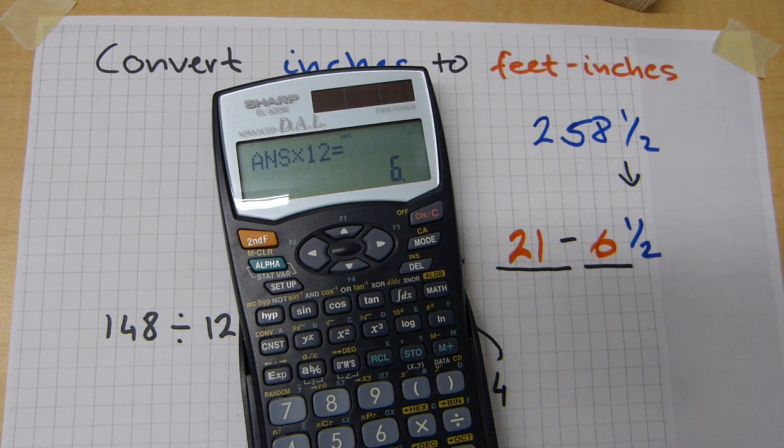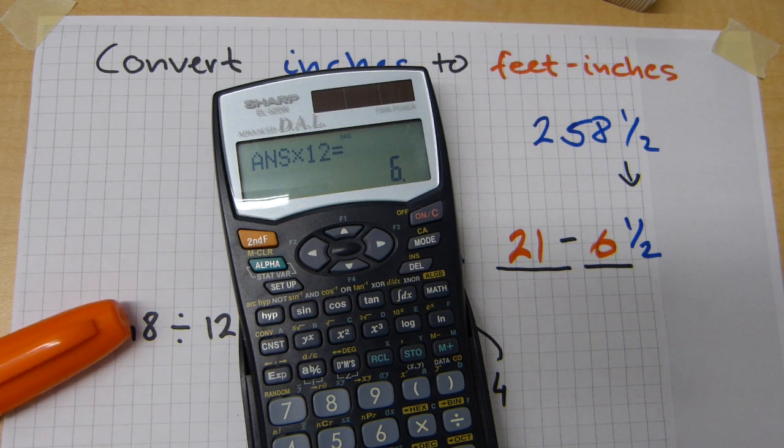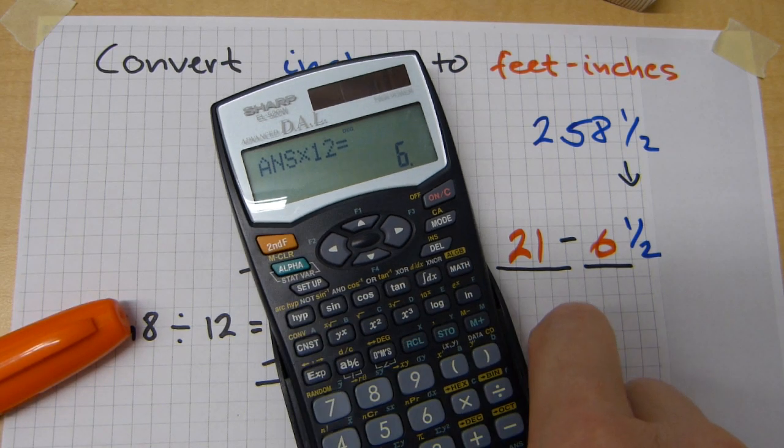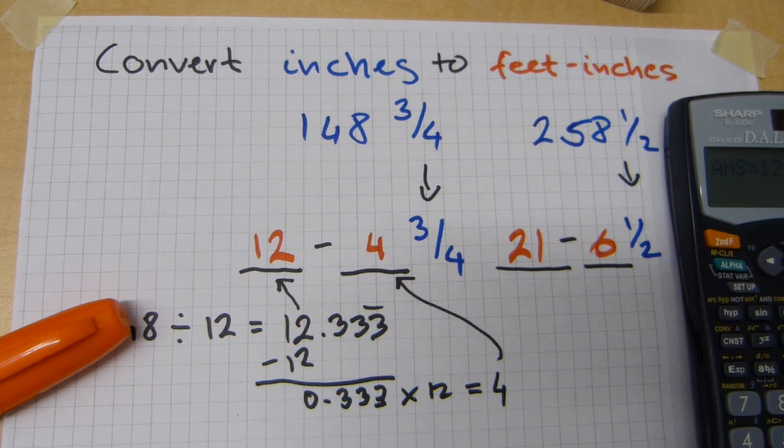Gets written down there. Obviously. Apparently, 258 inches is 21 feet and 6 inches. That's how to do it on a calculator.